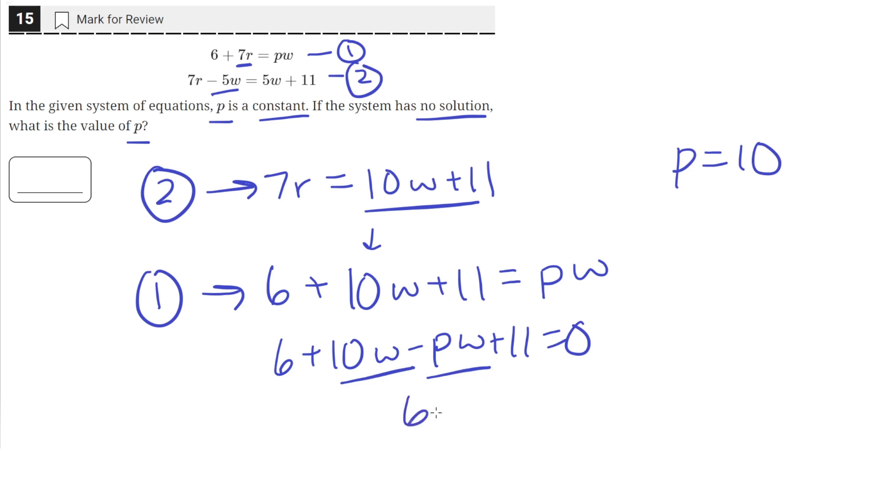And our equation after the w terms cancel out will result in this. And this is clearly an untrue statement. 6 plus 11 does not equal 0.